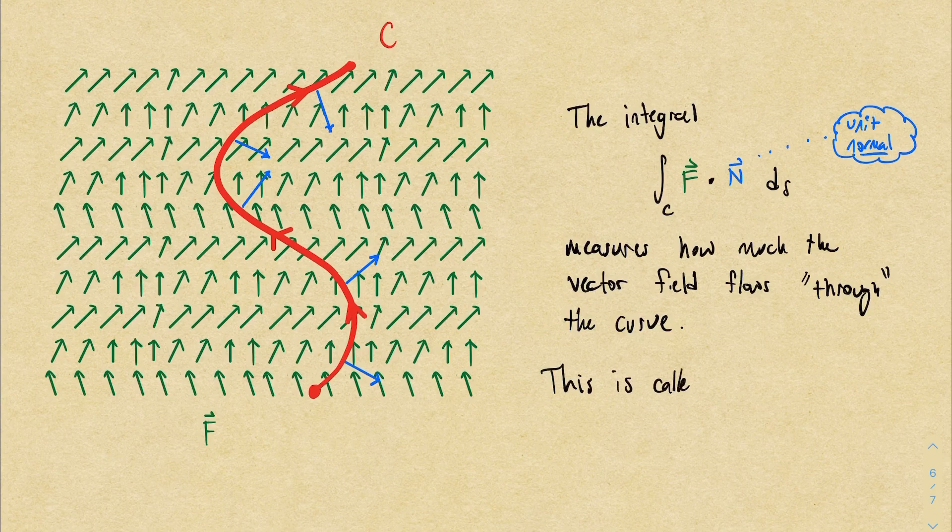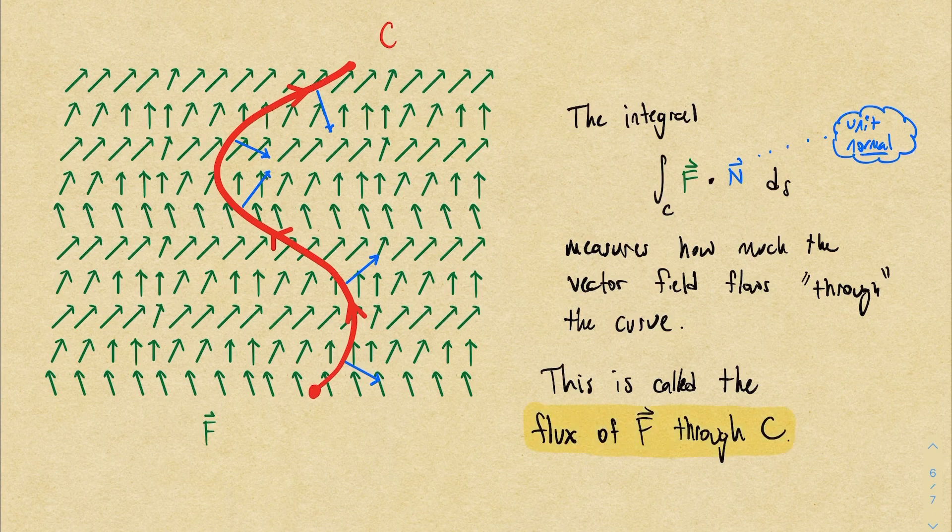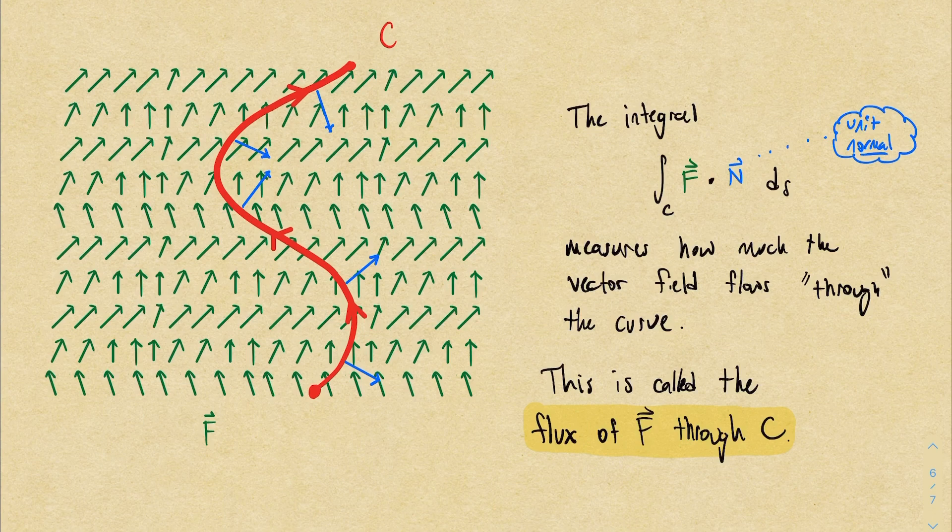This quantity is called the flux of the vector field through the curve. This isn't a new kind of vector line integral or anything like that. It's just a specific kind of scalar line integral. And you can think about it as measuring something sort of dual to what a vector line integral measures.